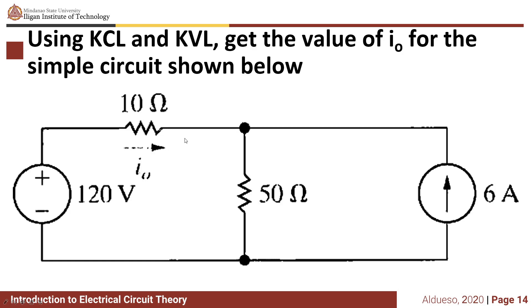Before solving the circuit, let's first identify the nodes. A node is where two or more circuit elements meet. We can identify three nodes here. We will label them as node A, node B, and node C.